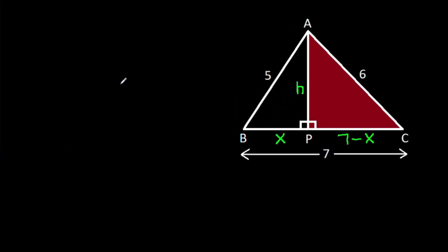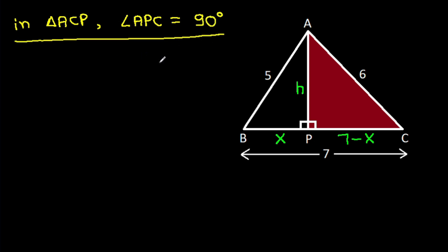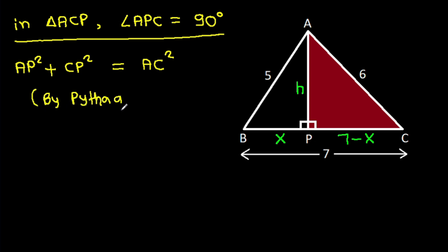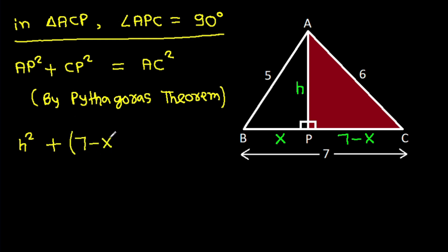And now in triangle ACP, angle APC is 90 degrees. So by Pythagoras theorem, AP squared plus CP squared equals AC squared. That is H squared minus (7 minus X) squared equals 6 squared, which is 36.